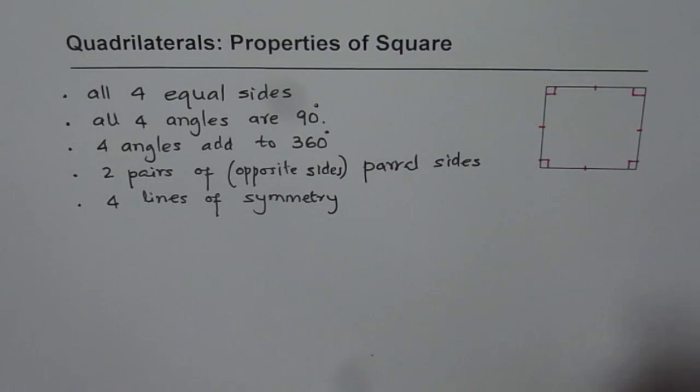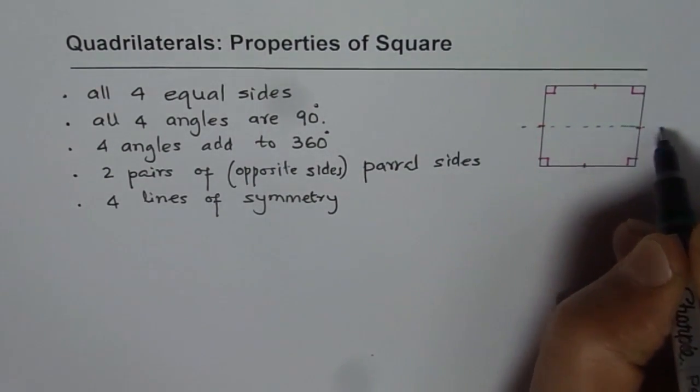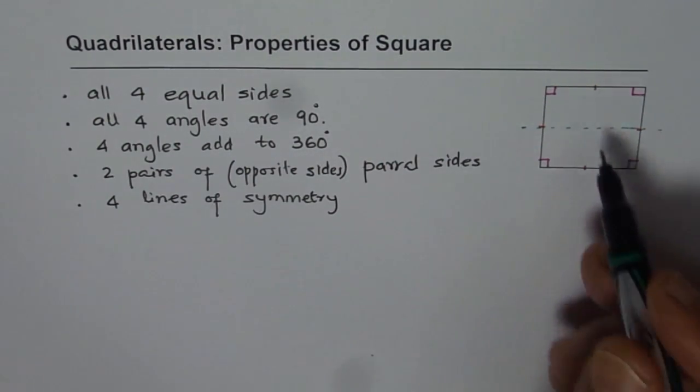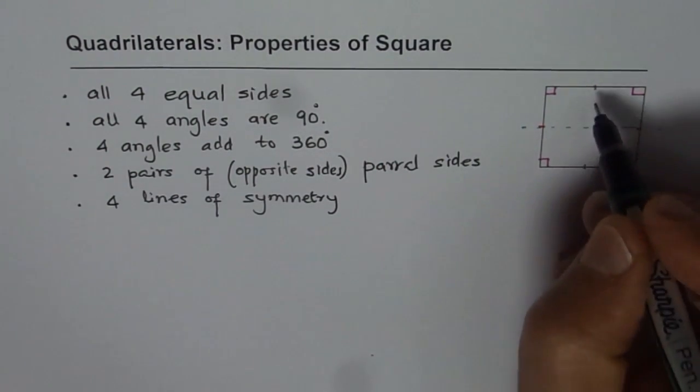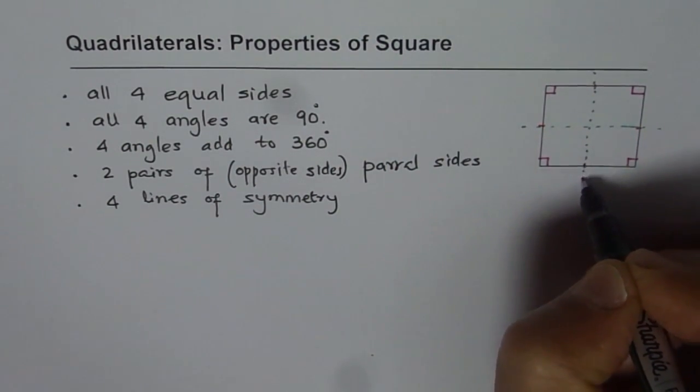Now lines of symmetry are four. One I can draw like this, a horizontal. If I fold it along the horizontal side, it will overlap. So it has that line of symmetry, even this one. So that makes it two.